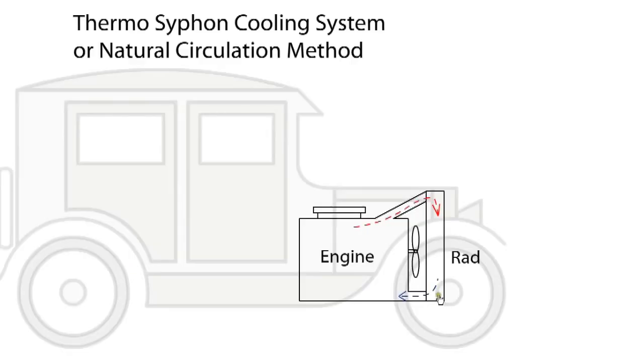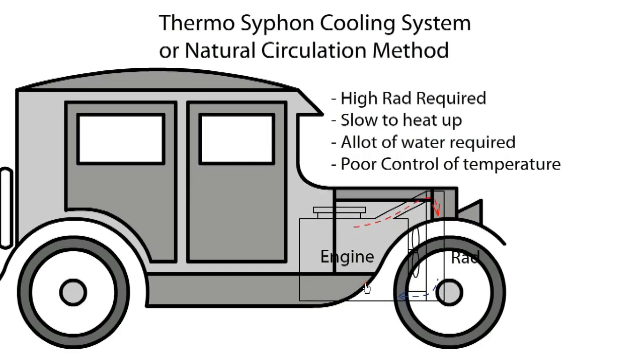Vintage cars relied on thermosyphon cooling. As hot water heats up, it expands, becomes lighter, rises and has a natural tendency to flow upwards. Hot coolant leaves the top of the engine block and is passed to the radiator, where it is cooled by the fan before returning to the bottom of the engine. Circulation was powered by convection alone.